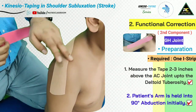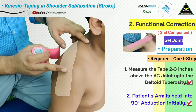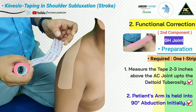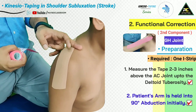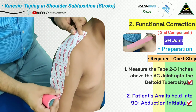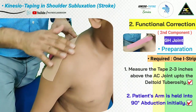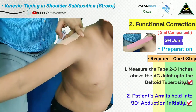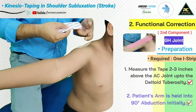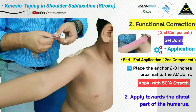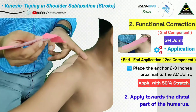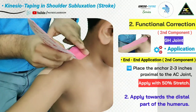The second part of the kinesio taping application addresses the functional correction of the glenohumeral joint. For this, we measure the kinesio tape from around two to three inches proximal to the AC joint up to the deltoid tuberosity. The patient's shoulder is abducted to around 90 degrees, which needs to be done with the help of another person. We then tear the anchor from one end and apply it around two to three inches proximal to the AC joint.